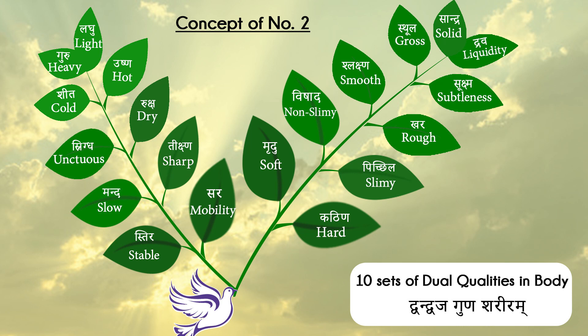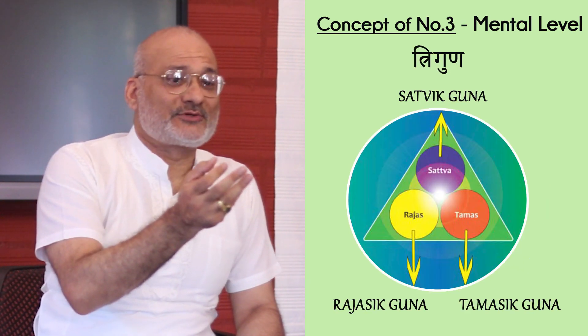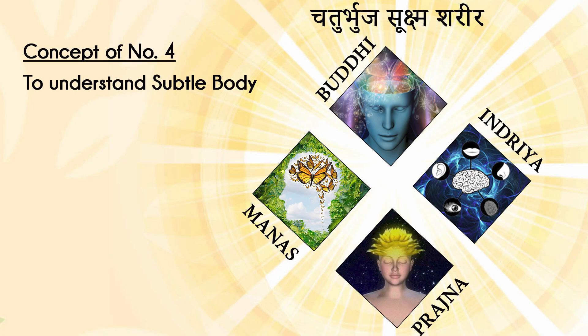We have numbers one through nine. Two things come in pairs: hot and cold, happiness and sadness, dry and wet, smooth and rough. Then three: vata, pitta, kapha — the doshas — which also correspond to sattva, rajas, tamas mind qualities. Then four: buddhi, consciousness, indriya (senses), mind, and prana.